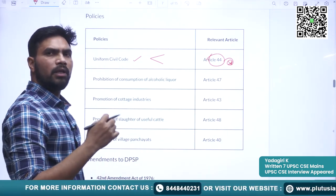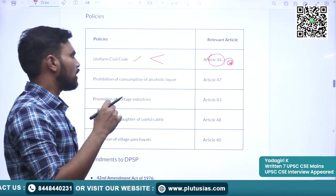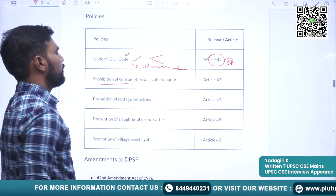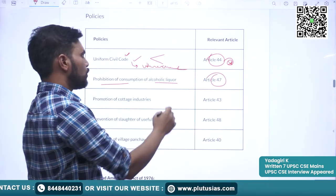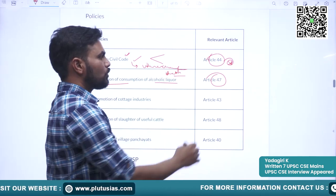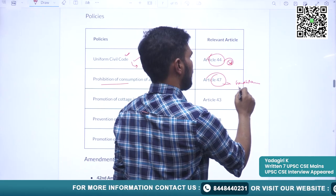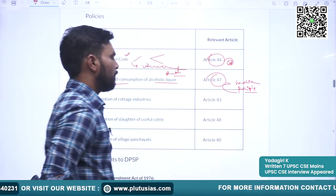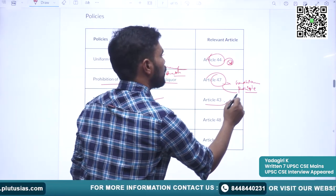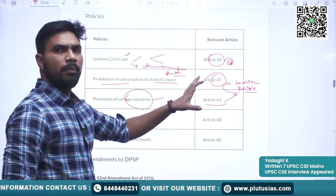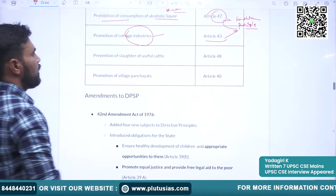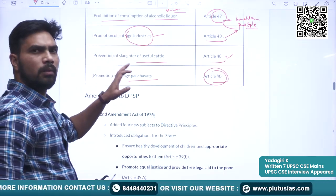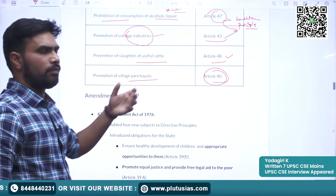Now we will see some policies that the government should strive to achieve. First is uniform civil code mentioned in Article 44 — there is a lot of debate about this provision. Prohibition of consumption of alcoholic liquor is mentioned in Article 47 — this is also a Gandhian principle. Promotion of cottage industries is Article 43. Prevention of slaughter of useful cattle is Article 48. Promotion of village panchayats is Article 40. These are policies which the state should strive to achieve.